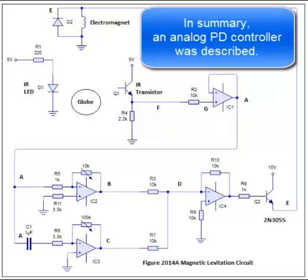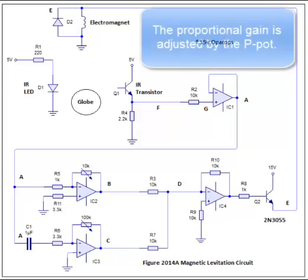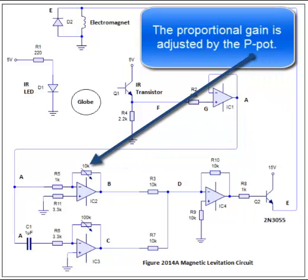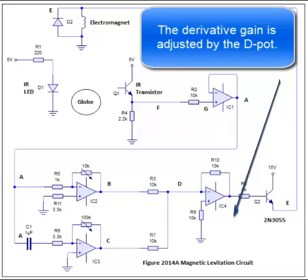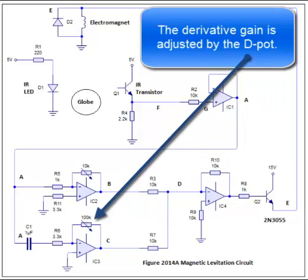In summary, an analog PD controller was described. The proportional gain is adjusted by the proportional potentiometer. The derivative gain is adjusted by the derivative potentiometer.